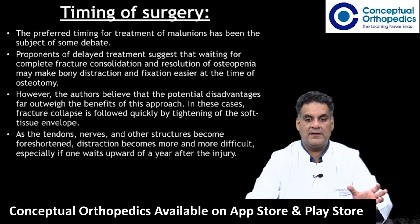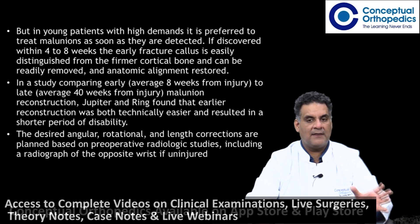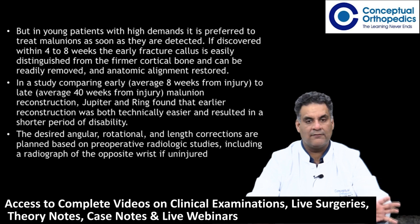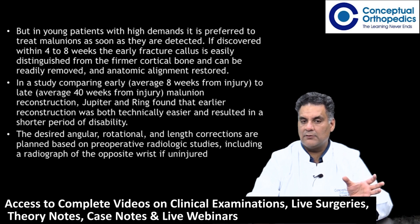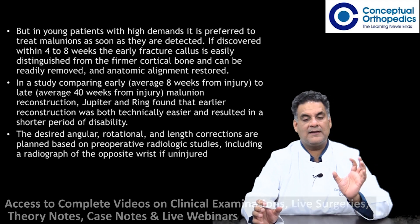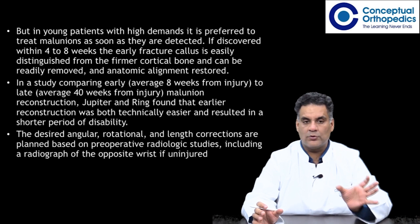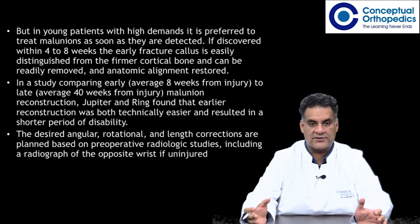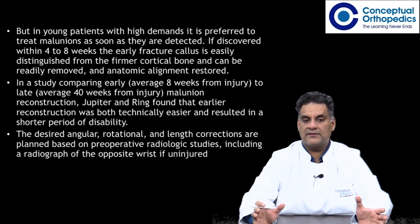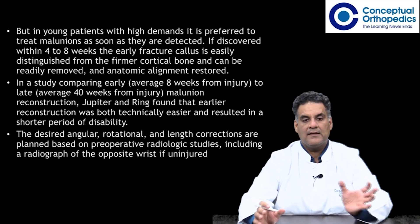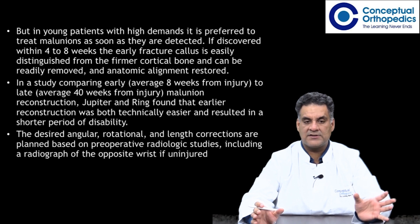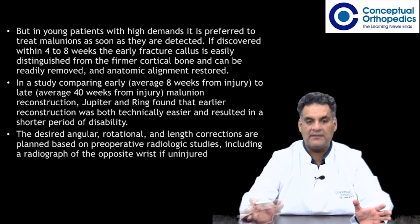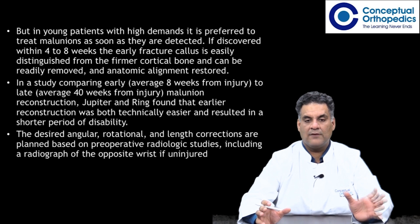Especially if you wait up to a year after injury, reconstruction becomes harder. In younger, high-demand individuals, it is preferred to treat malunion as soon as it is detected. If discovered within four to eight weeks, early fracture callus is easily distinguished from cortical bone and can be readily removed to restore anatomical alignment. Jupiter and Ring found that earlier reconstruction was technically easier and resulted in a shorter period of disability. Desired angular, rotational, and length corrections are planned based on pre-operative radiographic studies, including an X-ray of the opposite wrist if uninjured.